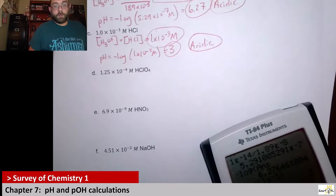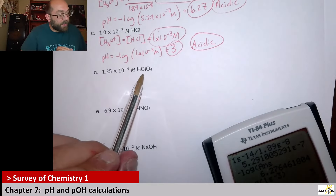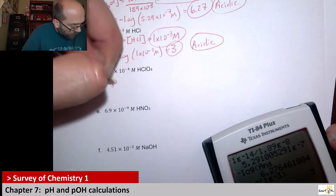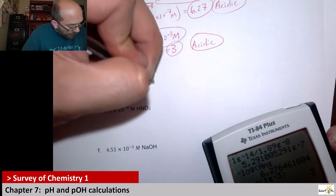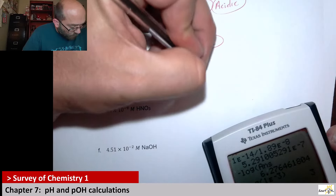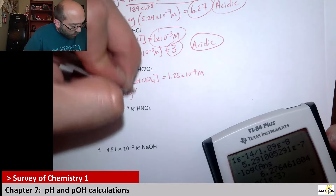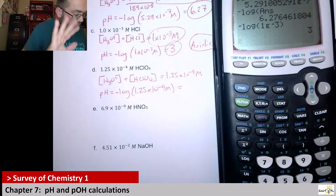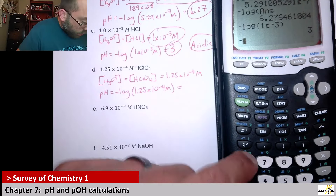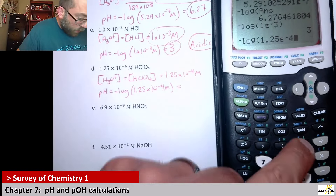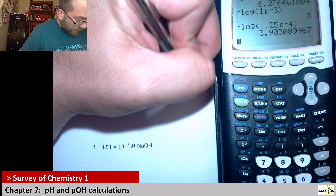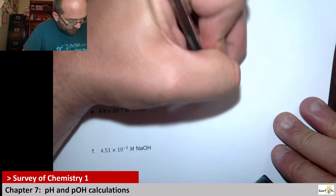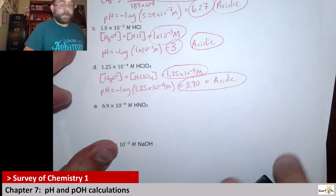Next, we have 1.25×10⁻⁴ molar perchloric acid — another strong acid. So the hydronium ion concentration equals the perchloric acid concentration: 1.25×10⁻⁴ molar. Our pH is the negative log of 1.25×10⁻⁴. I can tell it will be somewhere between 3 and 4. Calculating: negative log of 1.25 EE negative 4 gives pH = 3.90. That is below 7, so it's also an acidic solution.